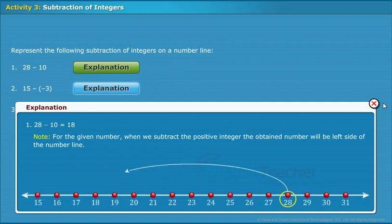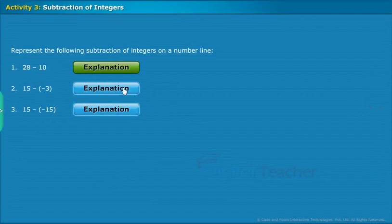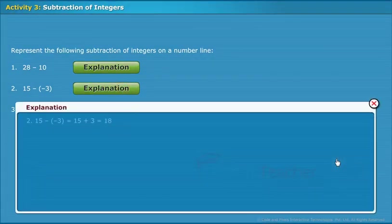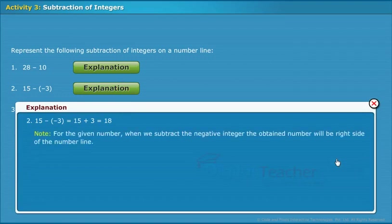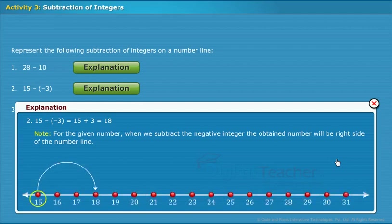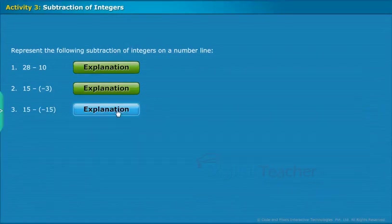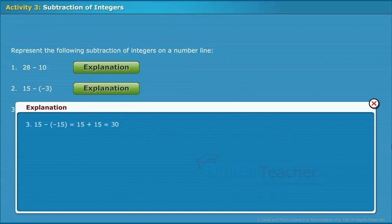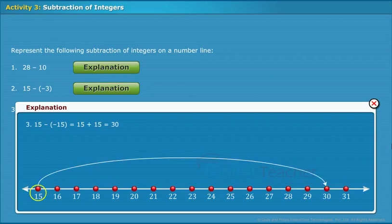Its representation is shown on screen. Note: for the given number, when we subtract a negative integer, the obtained number will be on the right side of the number line. Its representation is shown on screen.